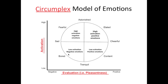We can also insert other emotions on this model. Take anger — is it high or low activation? Definitely high activation; you realize within the first millisecond that you are angry. And is it pleasant or negative? Definitely negative. So anger would be placed in the high activation, negative quadrant, somewhere between fearful and astonished — probably around 11 o'clock on the clock face.